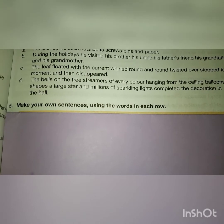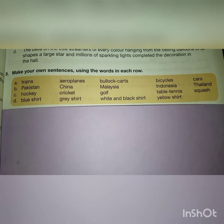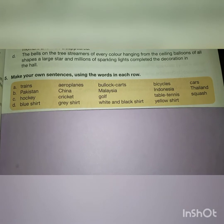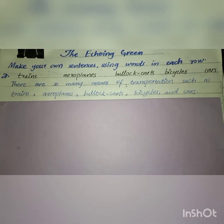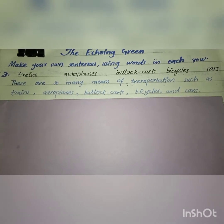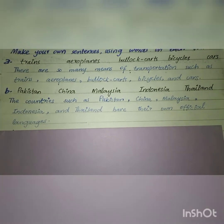Question 5: make your own sentences using the words in each row. We have a number of words in each row and need to use all of them in a sentence. Row a — trains, aeroplanes, bullock carts, bicycles, cars: 'There are so many means of transportation such as trains, aeroplanes, bullock carts, bicycles, and cars.' Row b — Pakistan, China, Malaysia, Indonesia, Thailand: 'Countries such as Pakistan, China, Malaysia, Indonesia, and Thailand have their own official languages.'